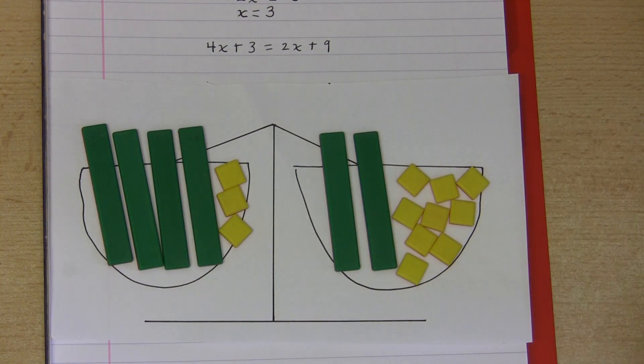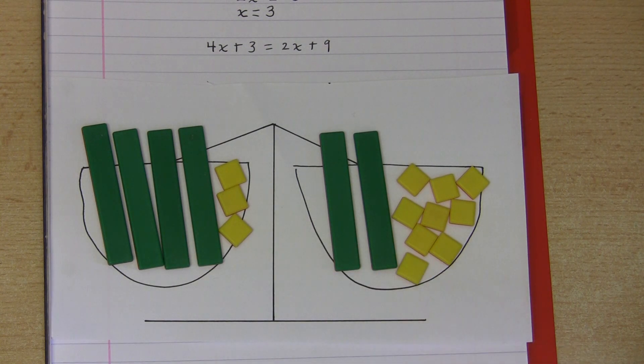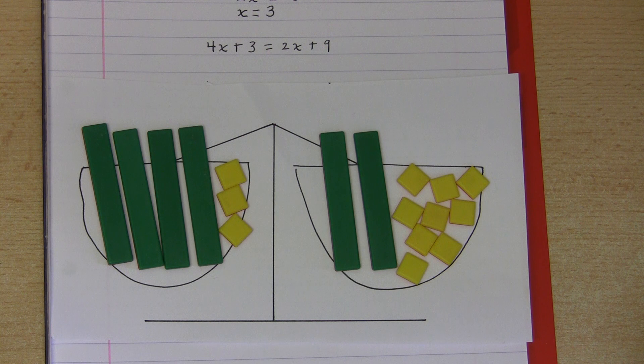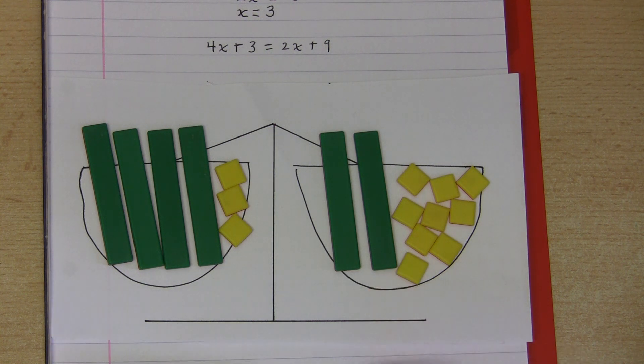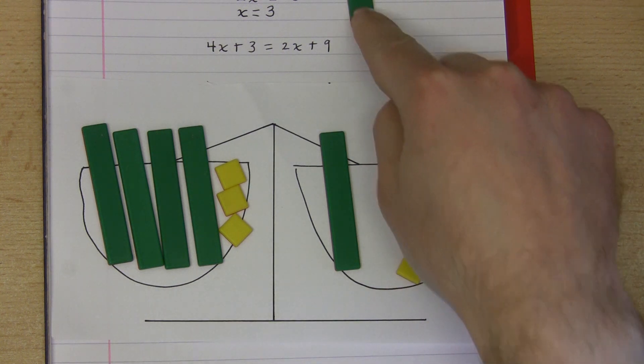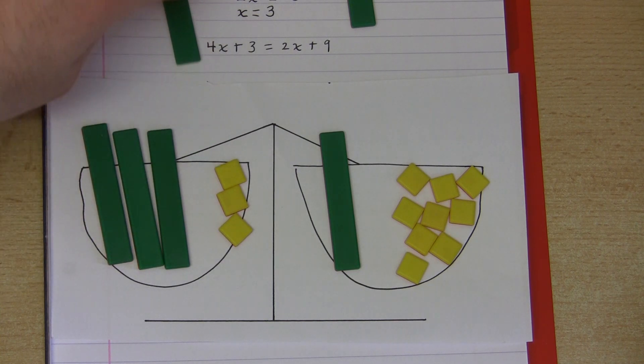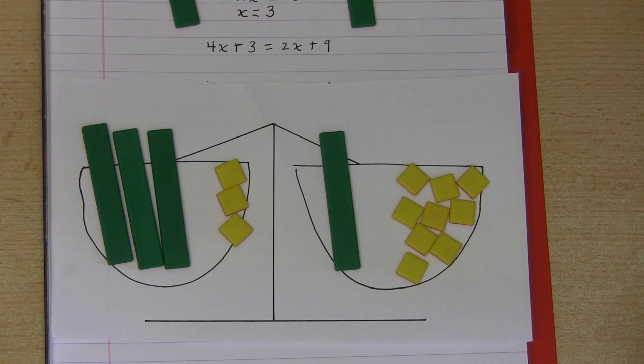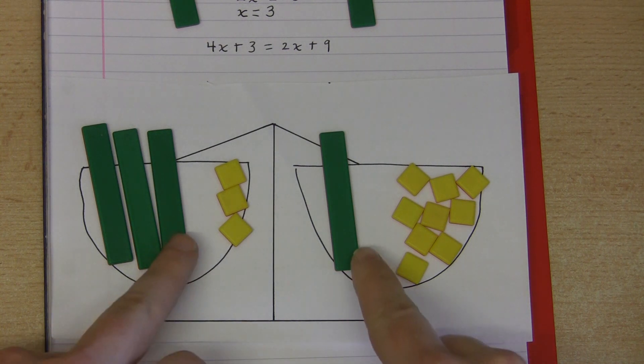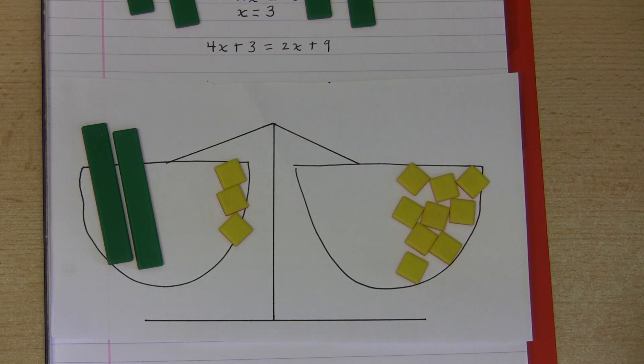So this would be one way of visualizing the equation, and then to try to solve the equation we could think about what we could change about this set of scales whilst keeping things balanced. Now if I take something out of each side, let's say I take a green rod, an x, out of the right hand side, then to keep things balanced I must do the same to the other side. So I must take a green rod, an x, out of the left hand side. And we can see I can do that again. I can take an x out of both sides of the equation and then we have an equation which is more simple.